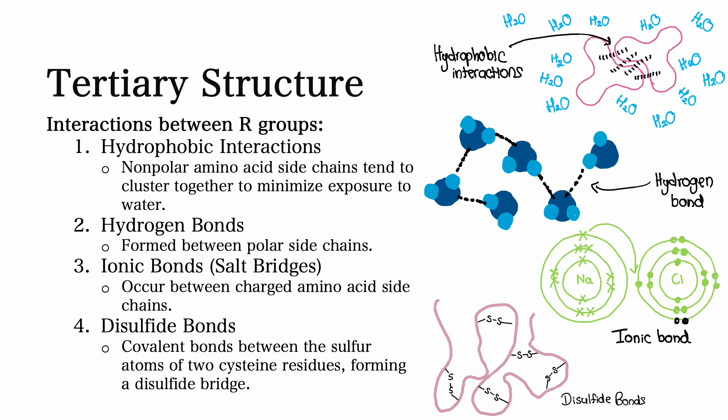Hydrogen bonds are formed between polar side chains, and on the other hand, ionic bonds occur between charged amino acid side chains.